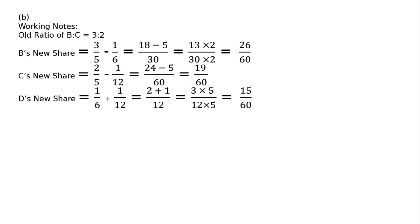D's new share: 1/6 plus 1/12, LCM 12, that is 2 plus 1, equal to 3 upon 12. Making denominator 60 by multiplying by 5 upon 5, that is 15 upon 60. Therefore, the new ratio of B to C to D is equal to 26 is to 19 is to 15.